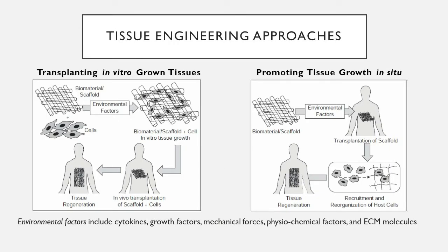This generalized strategy — in vitro grown tissues implanted later in situ — is pictured on the left. This is in contrast to a secondary approach, which requires promoting tissue growth in situ directly. Here, the biomaterial scaffold is placed in vivo at the start, and cells are introduced by the host through environmental factors like cytokines, growth factors, and mechanical forces. We previously talked about the inducement of M2 macrophages that help with revascularization and angiogenesis of these scaffolds.